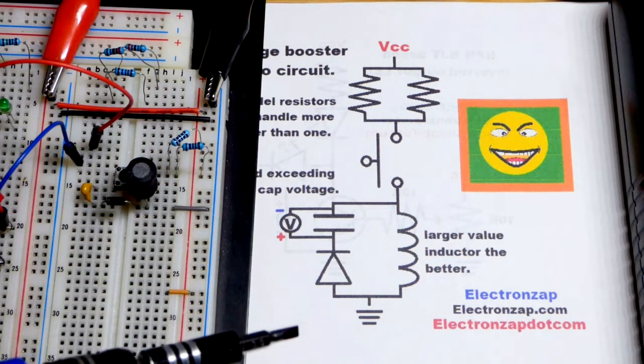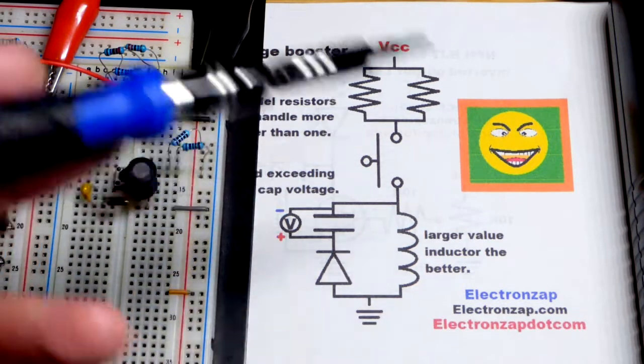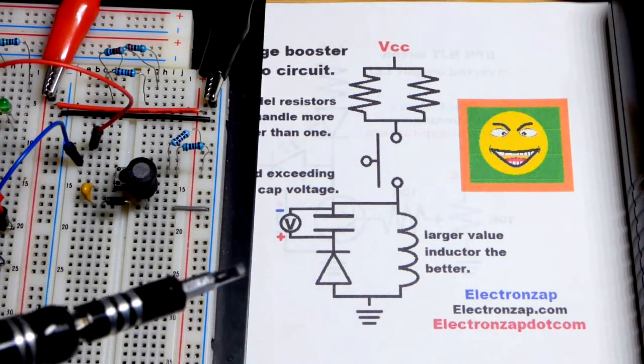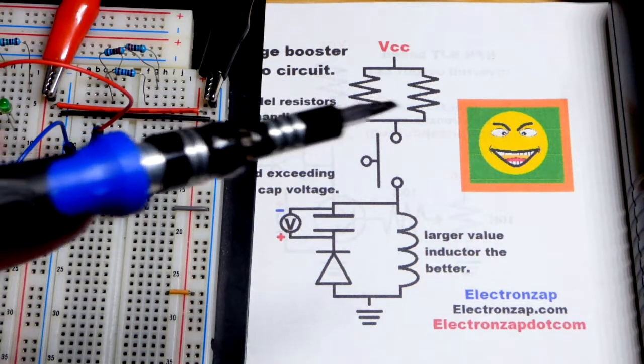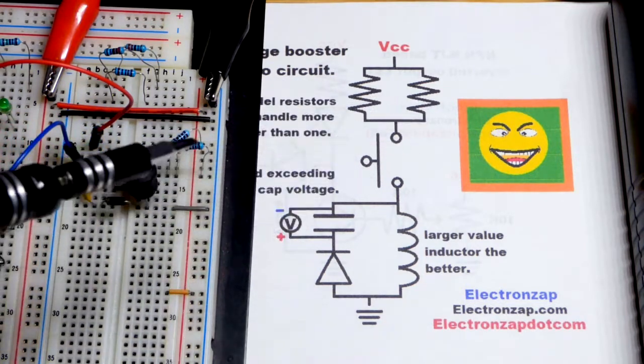There's voltage boosters out there. There's modules. They cost about a dollar and would work a whole lot better than this. But in any case, this demonstrates the basic principle. So we're going to have a couple parallel resistors.